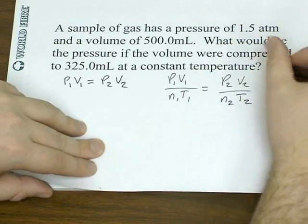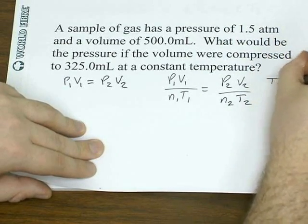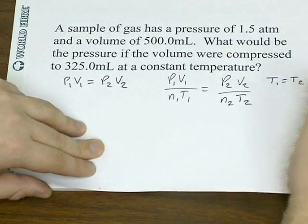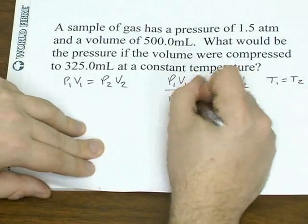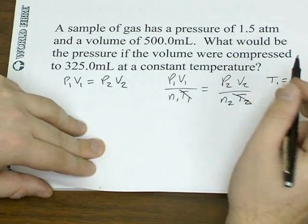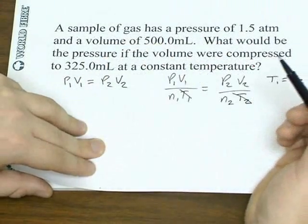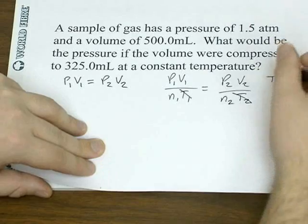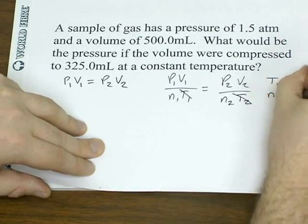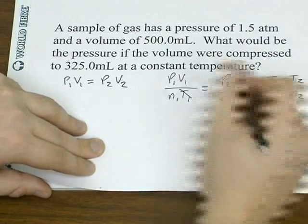Remember they tell you that the temperature is constant, so that means T1 and T2 are the same thing. If they're the same thing, then they effectively drop out of the equation. And since you're not told that you added or took away any amount of gas, you can assume N1 and N2 are the same thing as well.